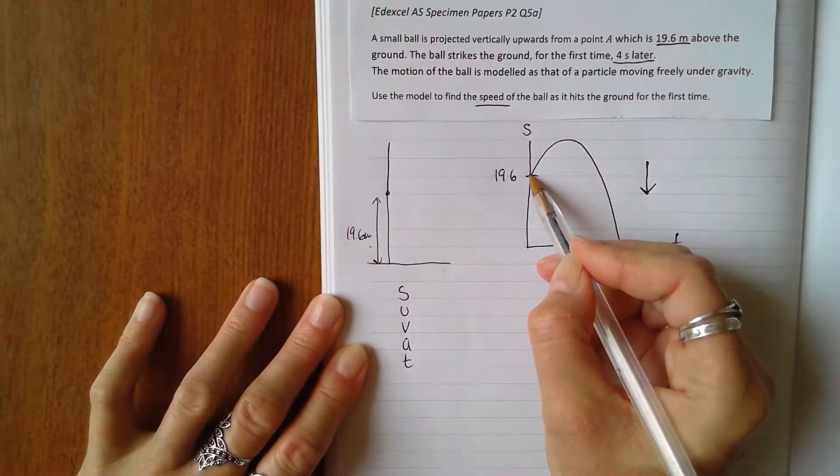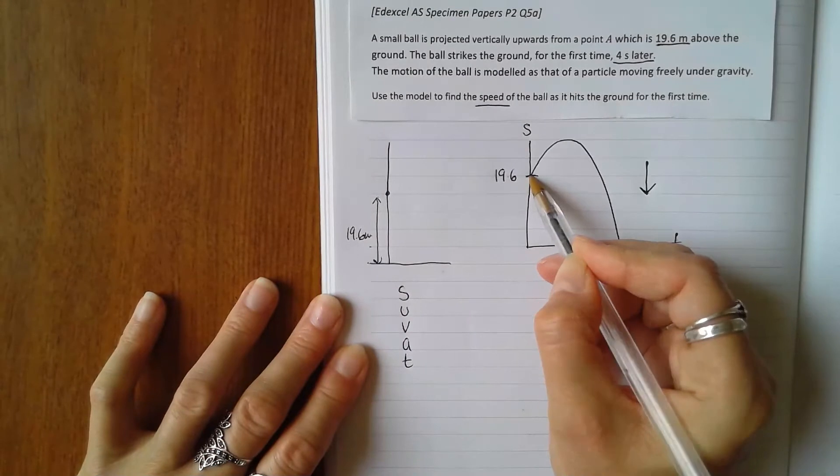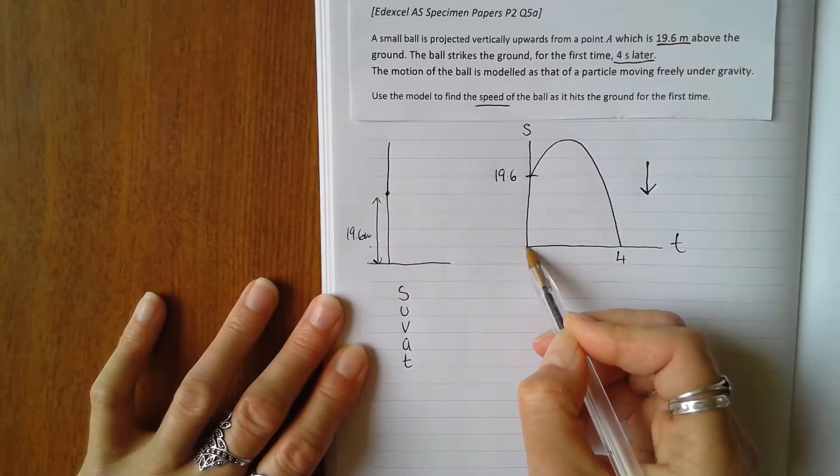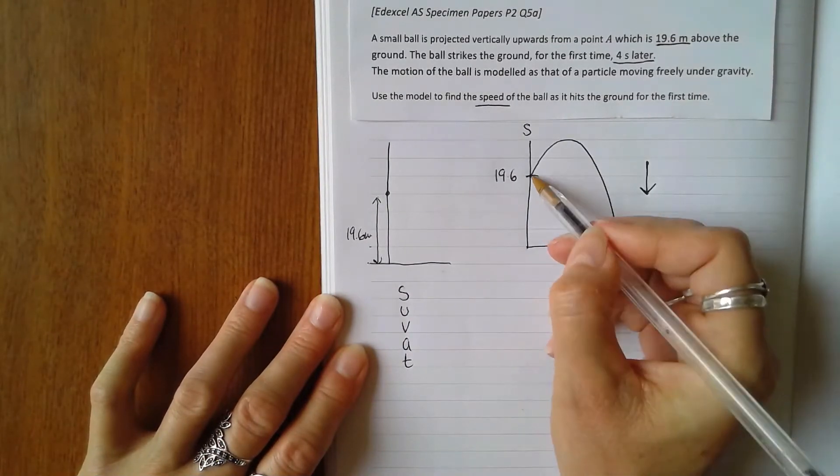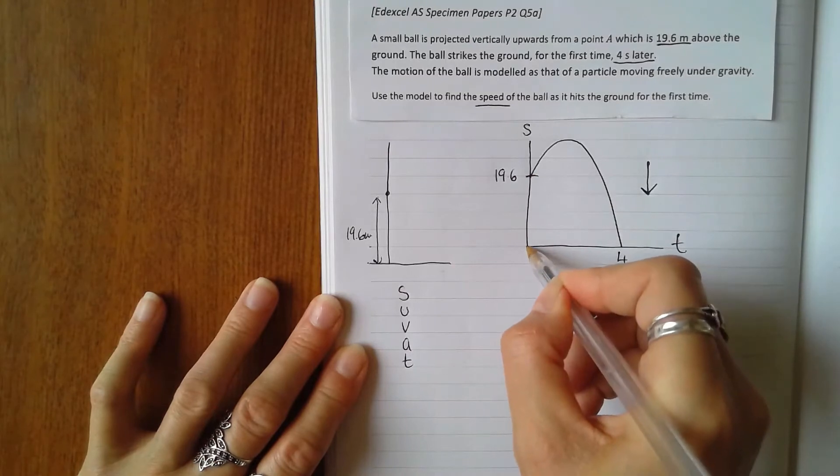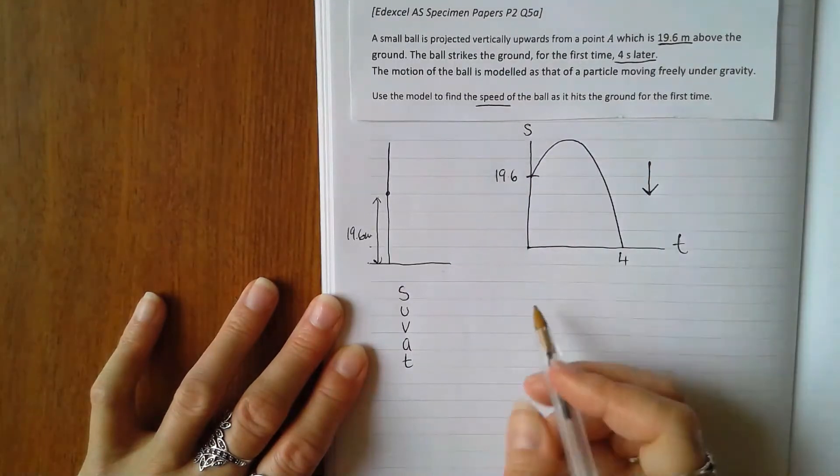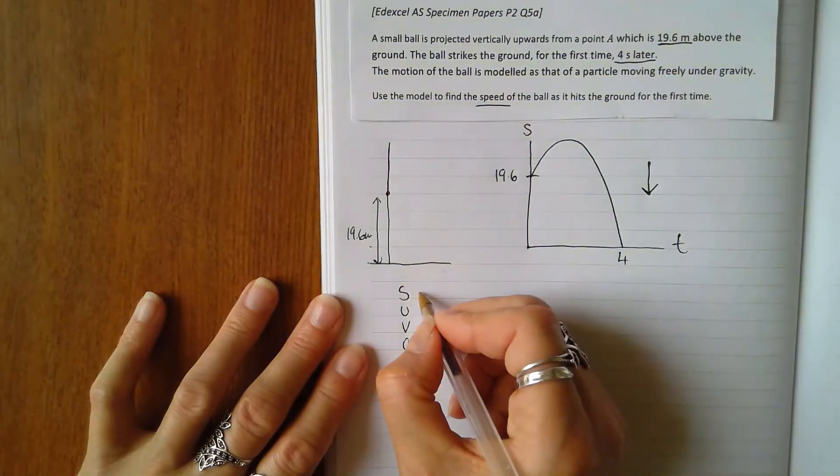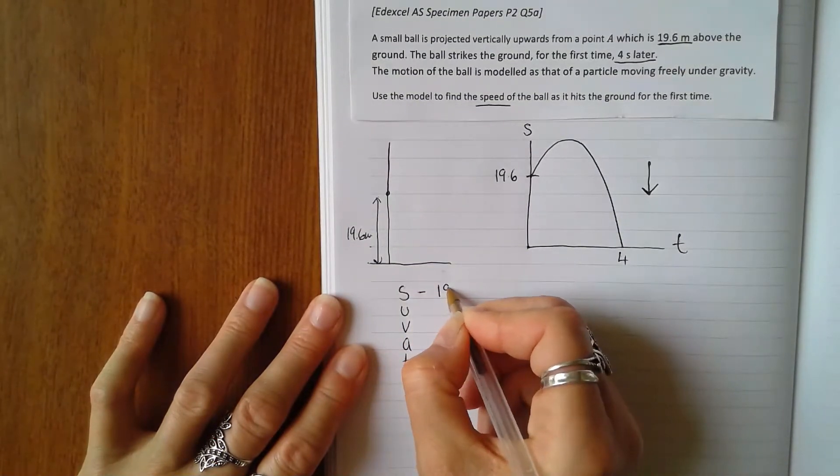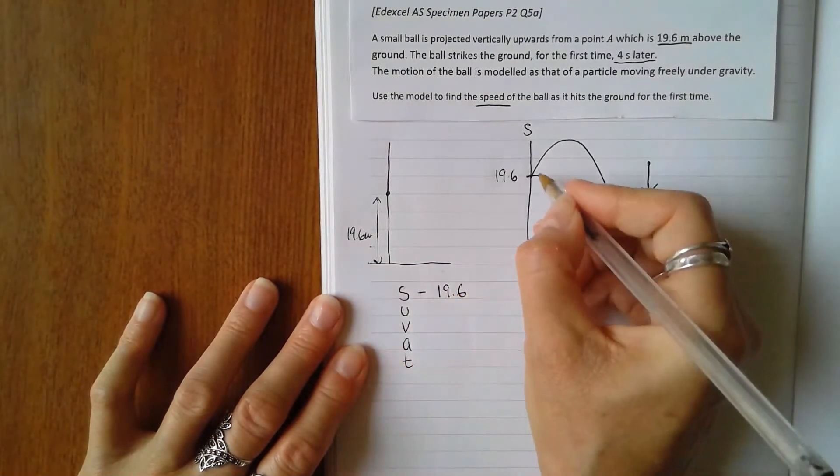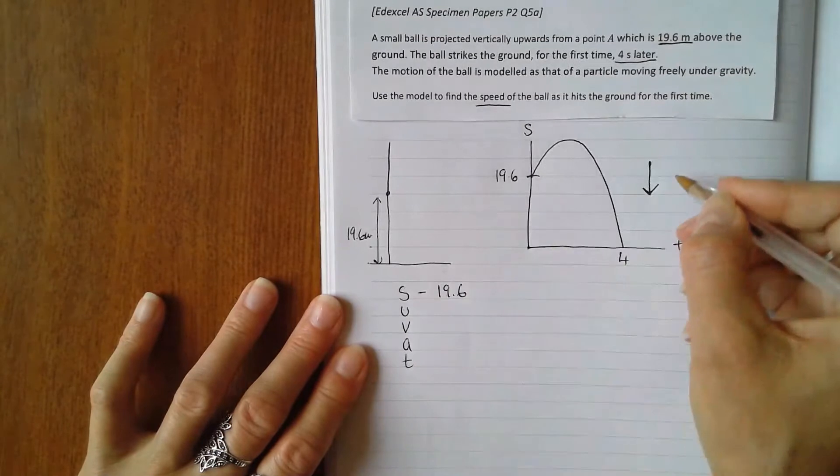Its displacement from 19.6 meters above the ground is 19.6 meters when it reaches here. It's been displaced 19.6 meters even though its distance is further in that four seconds. So 19.6, and as we're moving this way, that's positive. If I'd classed this direction as positive upwards, that would have to be negative.